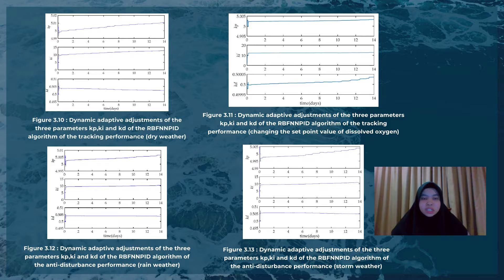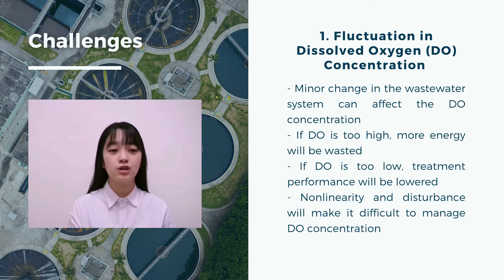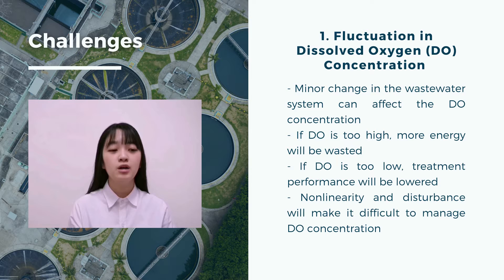Hi, I'm Peggy. I will talk about the challenges in the control of activated sludge process (ASP) in the wastewater treatment industry. The first challenge is the fluctuation in dissolved oxygen (DO) concentration. During the process, a minor change in the wastewater system, such as a change in flow rate or wastewater temperature, can impact the DO concentration. If it is too high, more energy is wasted; if too low, treatment performance is lowered. The non-linearity and disturbances in the process make it difficult to manage DO concentrations using the control system.